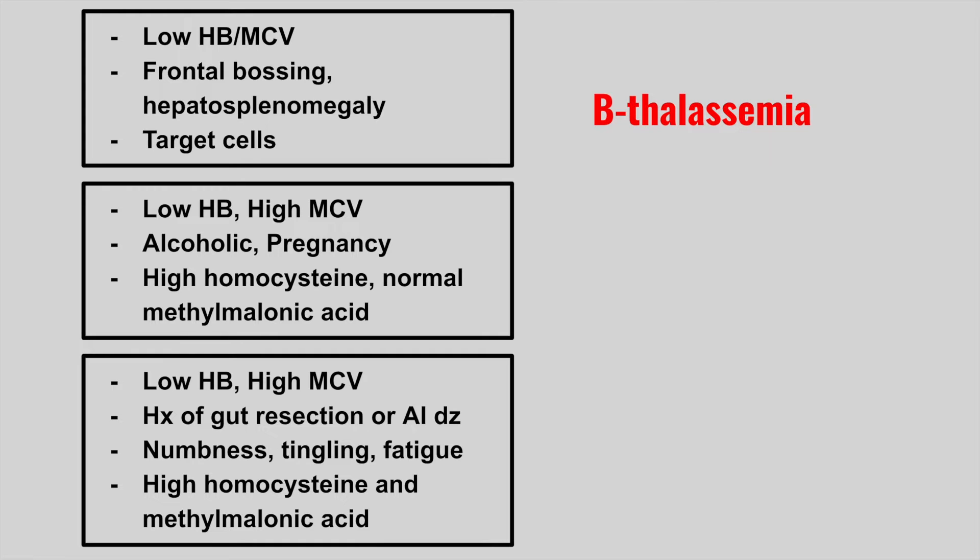The next patient is going to have low hemoglobin, a high MCV, and they're either going to be alcoholic or pregnant, with a high homocysteine but a normal methylmalonic acid level. This is folate deficiency — vitamin B9, folic acid.